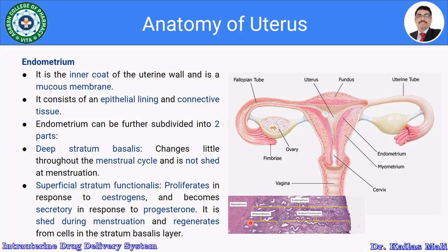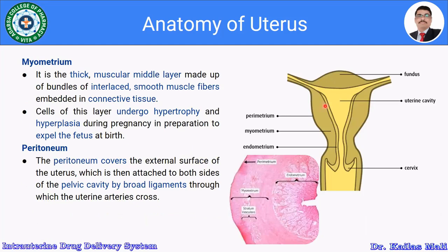The stratum functionalis is shed during menstruation and regenerated from cells in the stratum basalis layer. Moving to the myometrium — looking at the figure, this is the middle muscular layer of the uterine wall.